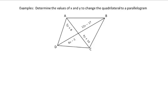Let's finish up with one last example: determine the value of x and y to change the quadrilateral to a parallelogram. Right away, you have diagonals, and if the diagonals of a quadrilateral bisect each other, then it's a parallelogram. So we want those diagonals to be bisected — the intersection point should be the midpoint. For x, we set the two pieces equal: 12x minus 17 equals 8x minus 5. Subtracting 8x and adding 17 to both sides gives 4x equals 12, so x equals 3.